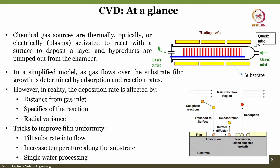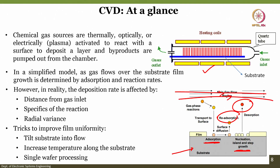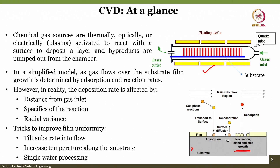CVD at a glance: you have seen this image during the thermal oxidation class. The key thing is that the gas-based reaction occurs and there is transport to the substrate surface, where nucleation islands and slab growth form. Some species are adsorbed, some reabsorbed, and some desorbed. Gas reaction occurs on the substrate, which is silicon in most cases. Chemical gas sources are thermally, optically, or electrically activated to react with the surface to deposit different layers, and byproducts are pumped out from the chamber.